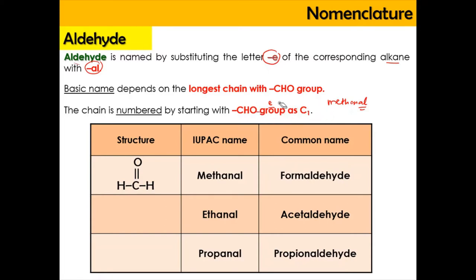For now, let's focus on the common names and IUPAC names, because sometimes the common name is used in exams. For example, the Grignard reagent is going to react with formaldehyde — they may give you a common name, so you need to be able to convert the common name into a structure or into the IUPAC name. I've put them in a table so it's easy to understand and relate them to one another.